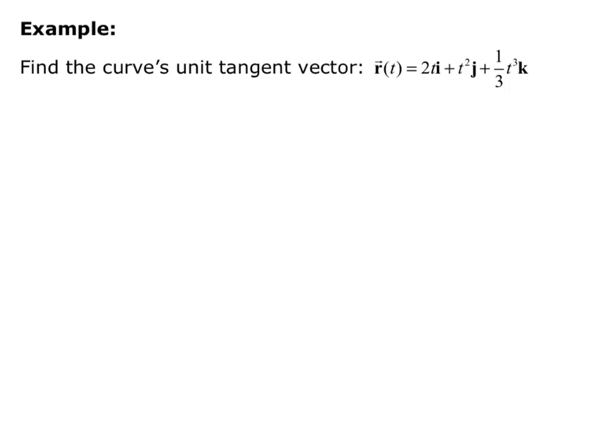So let's use our definition to find the curve's unit tangent vector where r of t equals 2ti plus t squared j plus one third t cubed k. So that's our position vector.